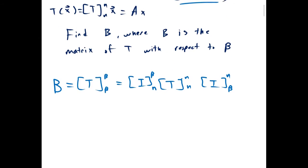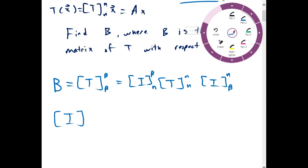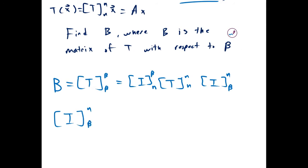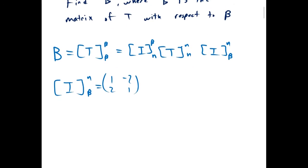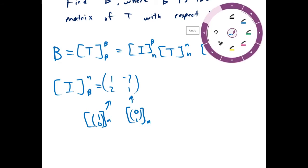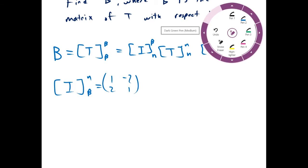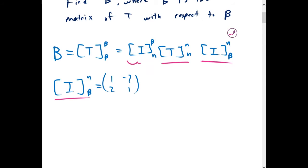What do these mean? The identity matrix from beta to the normal basis — the identity from the normal basis to the beta basis, for example — would be just the two vectors that make up the basis. This is because [1,0] in the normal basis corresponds to [1,2] in the beta basis, and [0,1] in the normal basis corresponds to [-2, 1]. So this one is usually easy to find, and we've already got it taken care of.